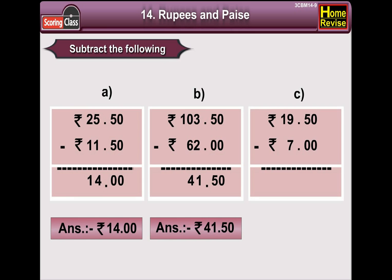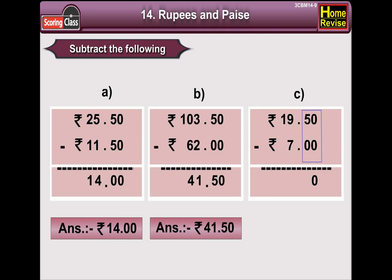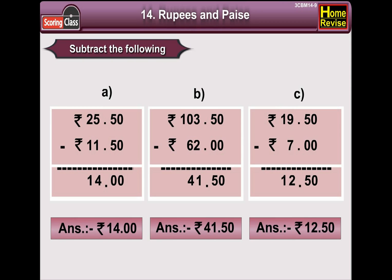C: Rupees 19 and 50 paisa minus rupees 7. 0 minus 0 is 0, 5 minus 0 is 5. Now, 9 minus 7 is 2 and we will bring down 1. So the answer is rupees 12 and 50 paisa.